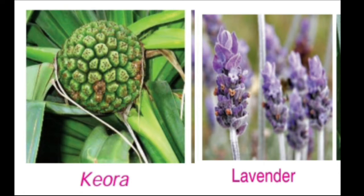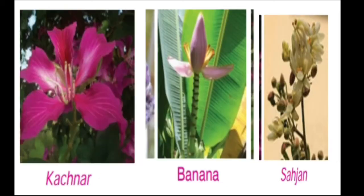So rose, jasmine, Kevda and Lavender — these are the flowers which are used to make perfumes. Then, some flowers can be cooked and eaten like a vegetable.